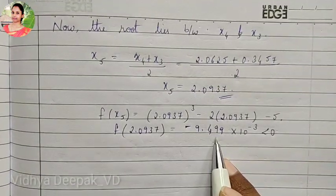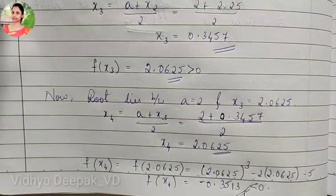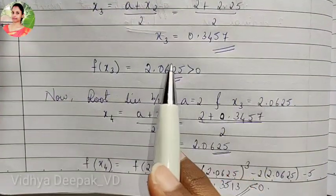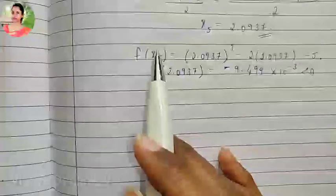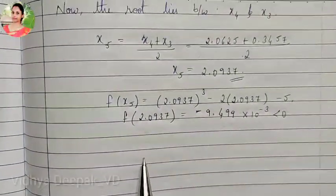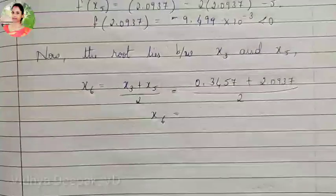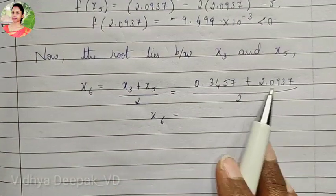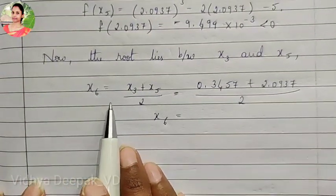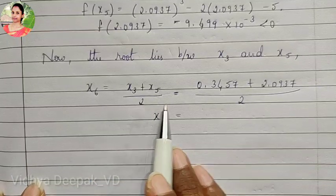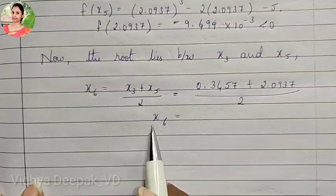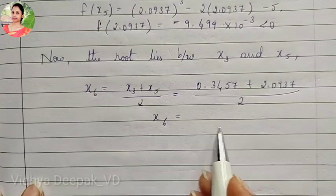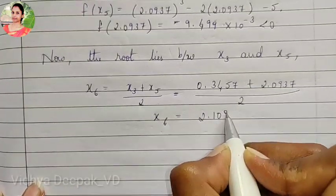f of x5 is negative, so we search for the previous positive number. The previous positive was f of x3. So the root lies between x3 and x5. Now x6 equals x3 plus x5 divided by 2, that is 2.125 plus 2.0937 divided by 2, giving x6 equal to 2.1093.